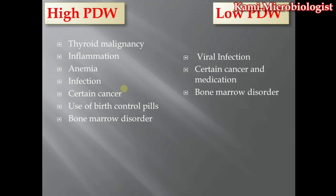There are some conditions in which PDW gets low or high, causing certain diseases. High PDW is caused by thyroid malignancy. In thyroid malignancy, there is a cancer in the thyroid gland. In this case, T3 and T4 will get high or sometimes low — causing hyper- or hypothyroidism — which disturbs the platelet amount in the blood, leading to high PDW.